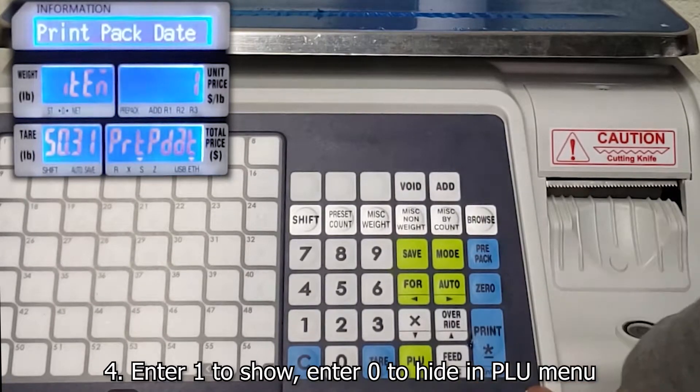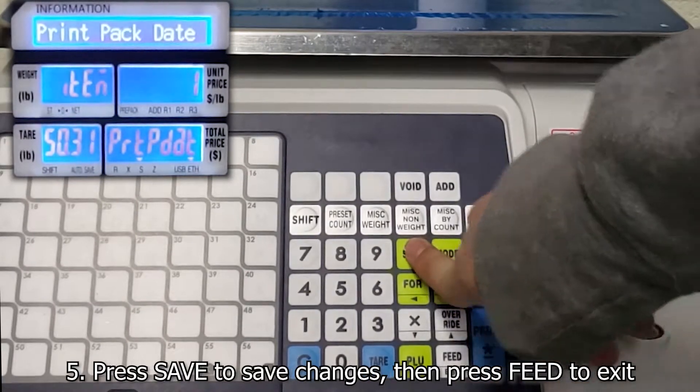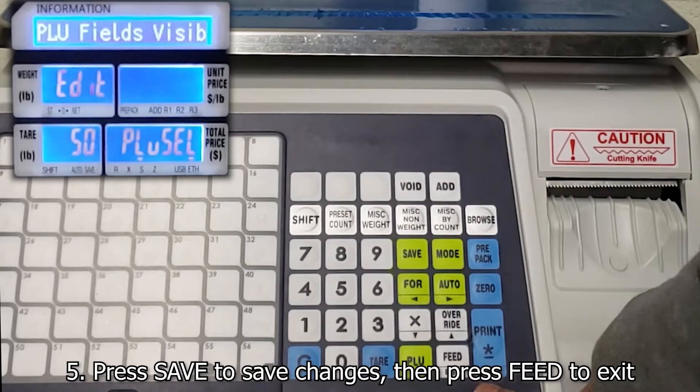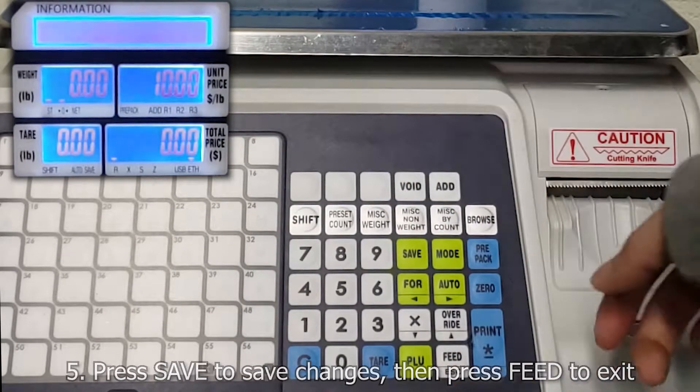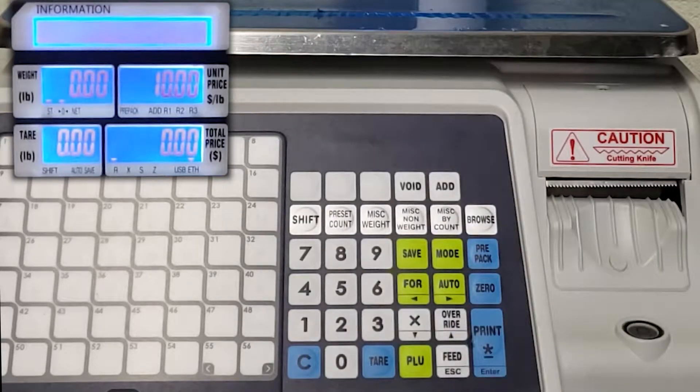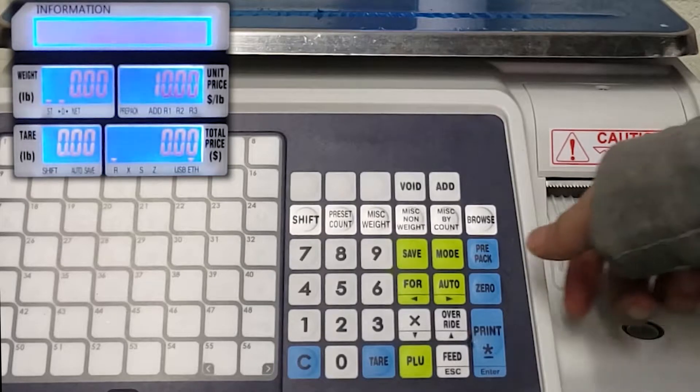So after I change these settings, I'm just going to save and go back to the main menu and check if my settings worked. So I changed print sell by time and those are the settings to 0, right? So they shouldn't be showing up on my PLU menu now.